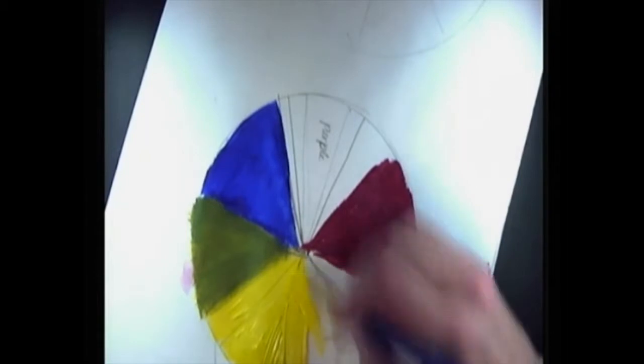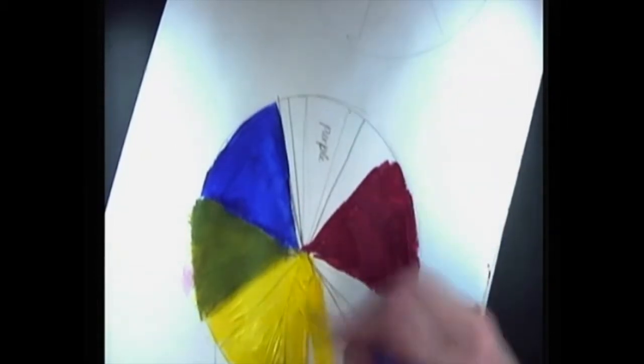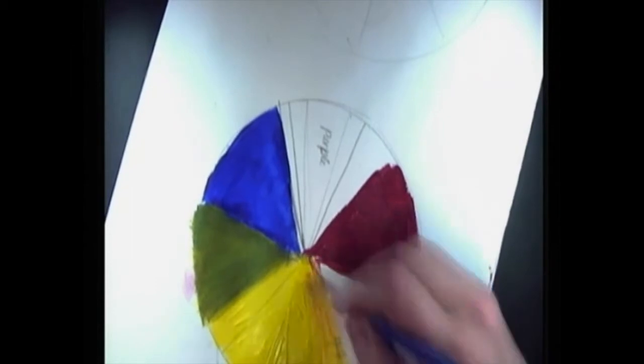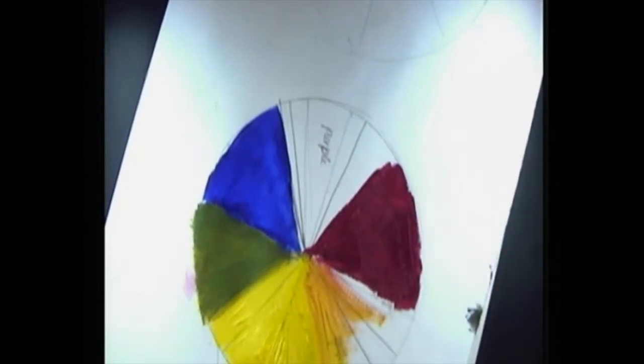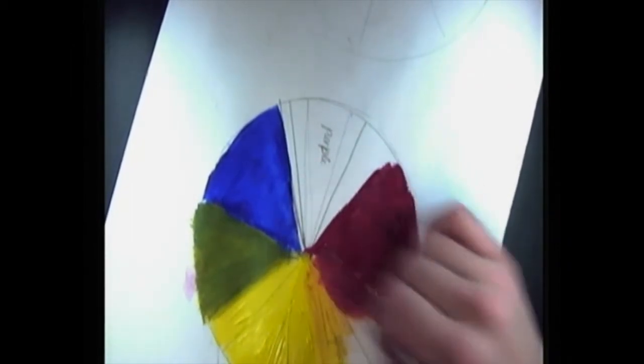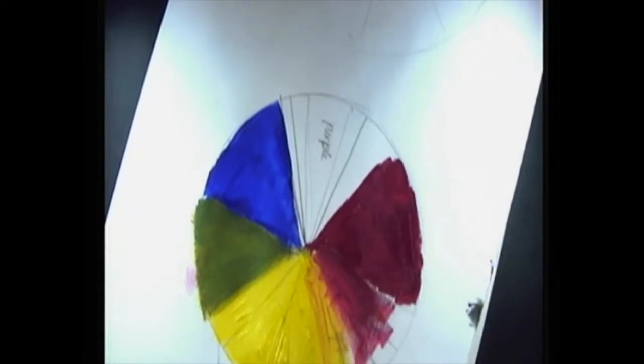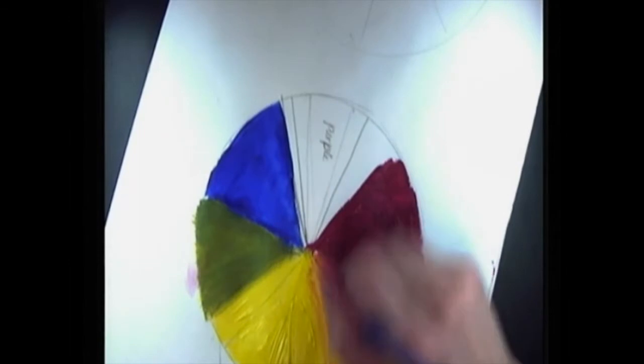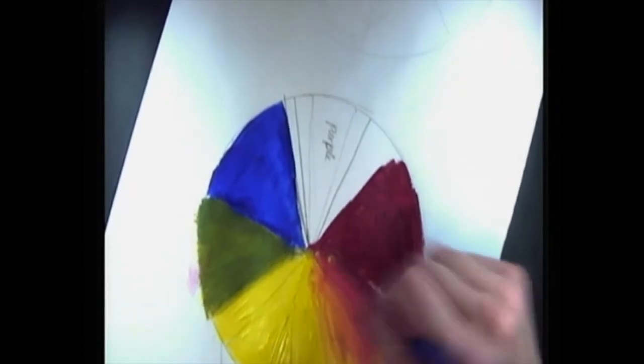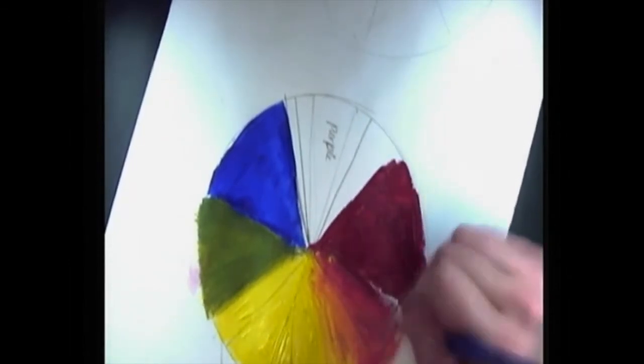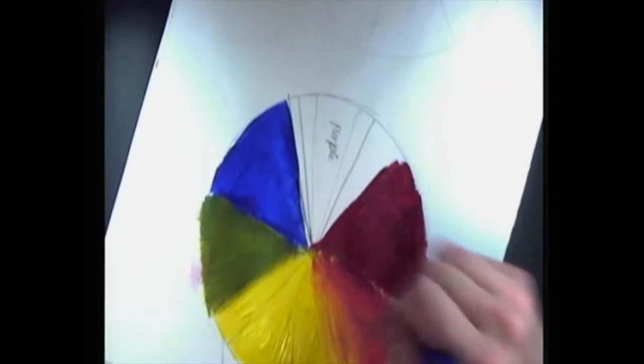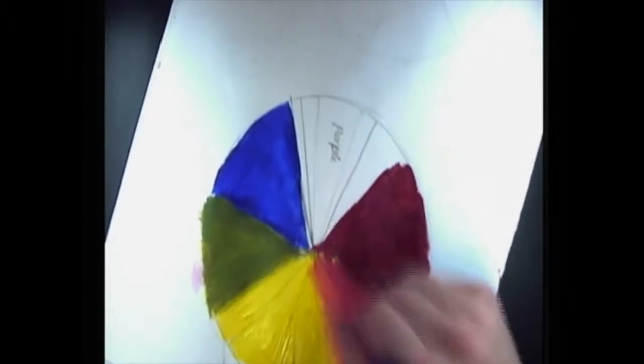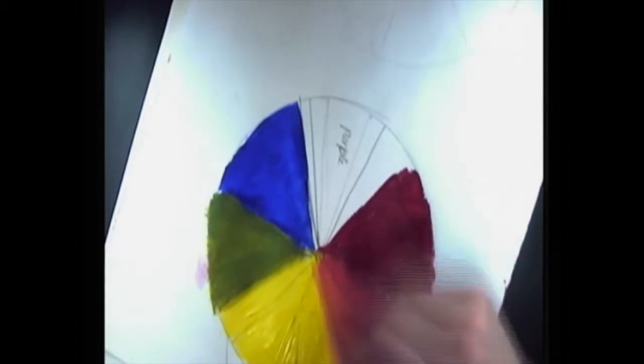So now I'm going to start bringing this yellow over as I did with the green, and then I'm going to start bringing my red over. Now you want to be real careful between that yellow and that red, just like you had to be real careful between the green, the blue, and the yellow, because that blue is so much darker than the yellow, it's not going to take a whole lot to overpower it completely.